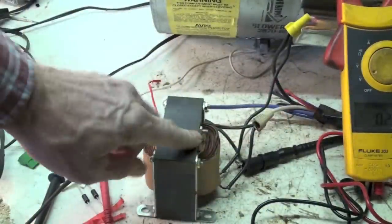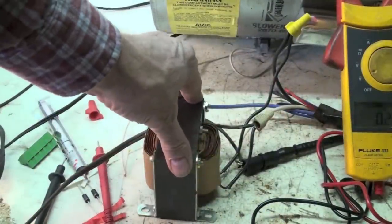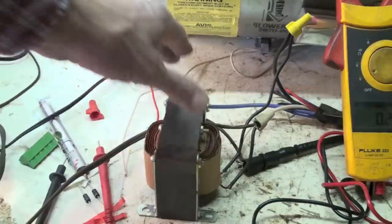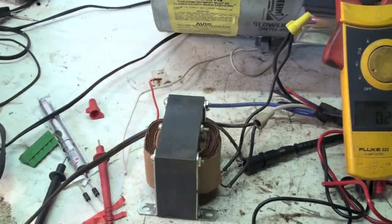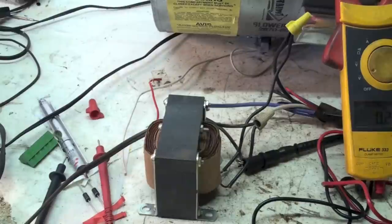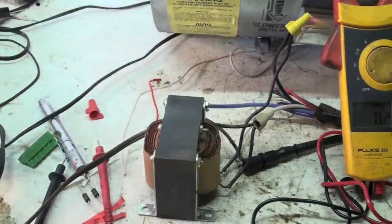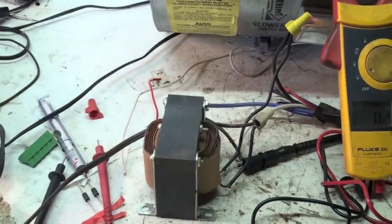So the choke coil has reduced the voltage coming out by inductive reactance. It has not increased the amp draw. The amp draw did not go up. The amp draw went down. Usually on a motor it will go up if you reduce the voltage.